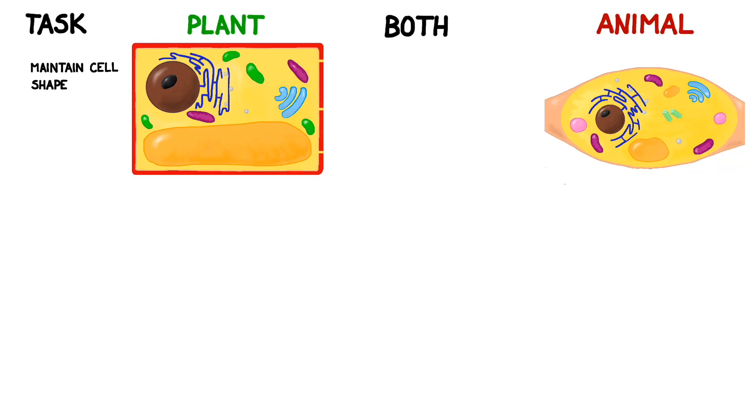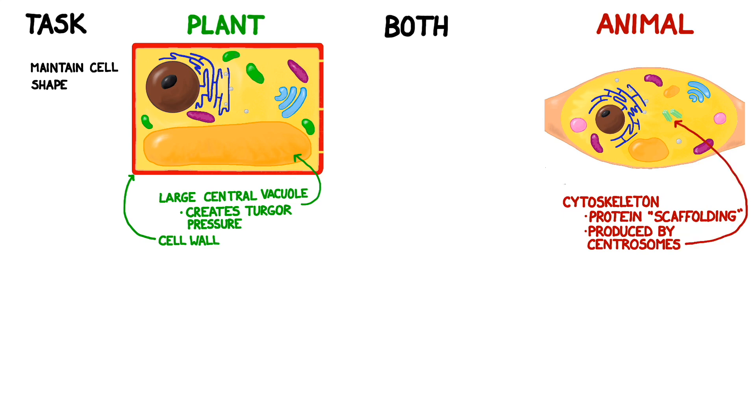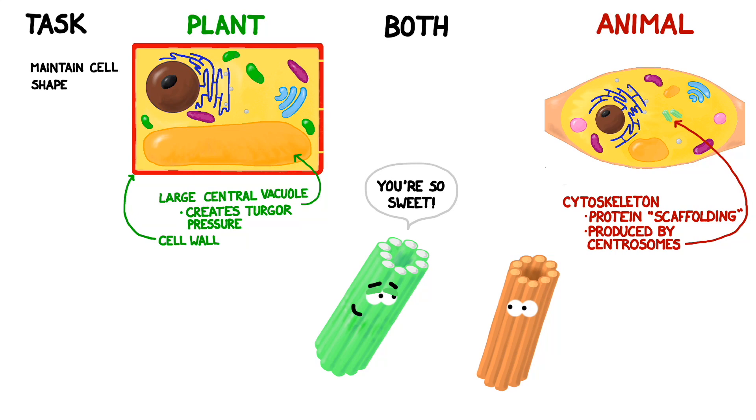When it comes to maintaining cell shape, plant and animal cells have very different strategies. Plants use their large central vacuole to create turgor pressure and use that in conjunction with their supportive cell walls. The cell walls are usually made of cellulose, which is what makes plants crunchy. Animal cells are more squishy, so they rely on a protein scaffolding called the cytoskeleton. The cytoskeleton is produced by organelles called centrosomes, which my students always say look like churros. I totally agree, but they're probably a lot less delicious.